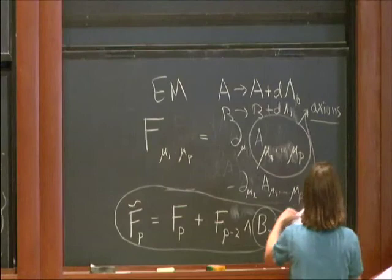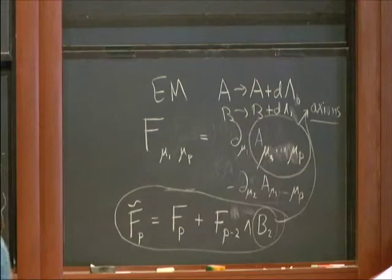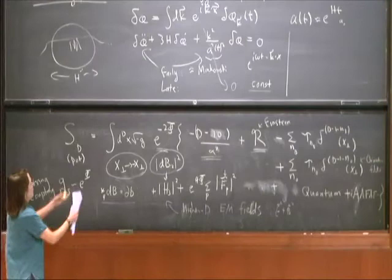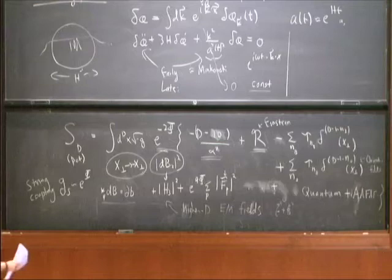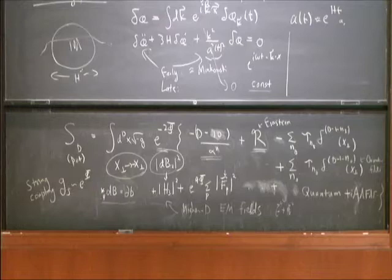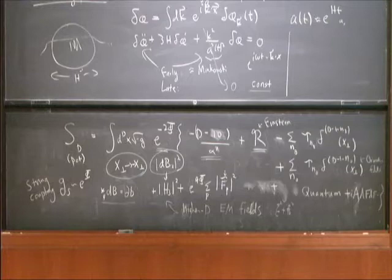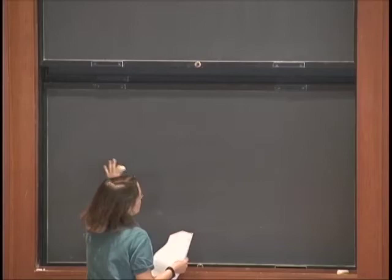We're interested in inflationary dynamics. The first question you might ask given this picture: there are these scalar fields like the overall size of the space and the string coupling, which appears in the action. Can those give a flat potential, or more generally a slowly changing potential? The answer to that is no. It's a fairly simple calculation. We need to start with this action and dimensionally reduce to four dimensions, keeping the scalar fields such as the overall volume and other scalar field modes.